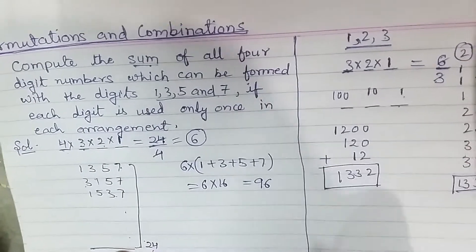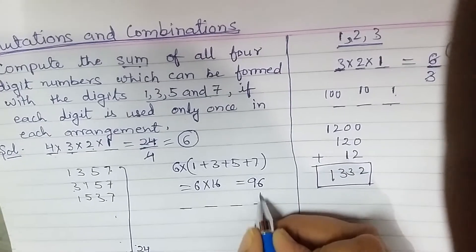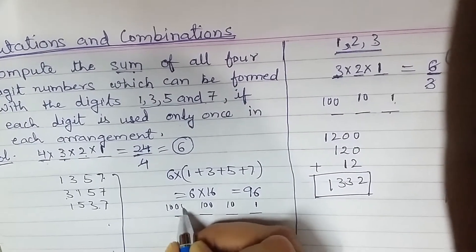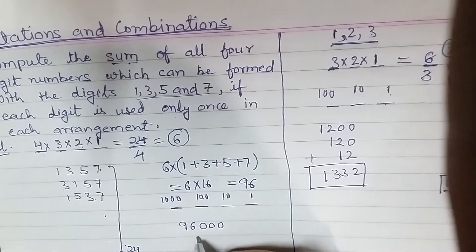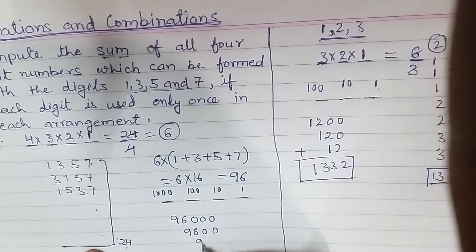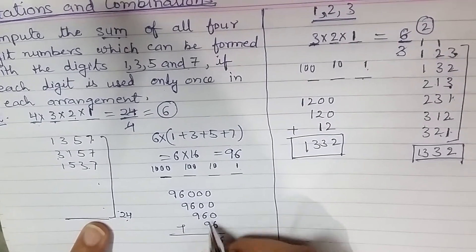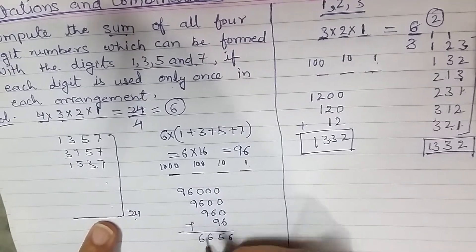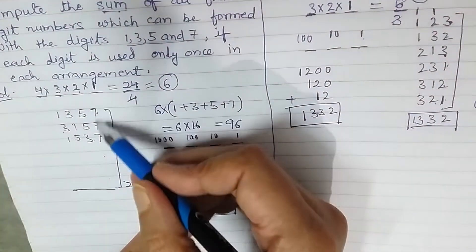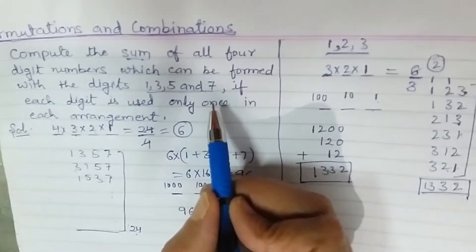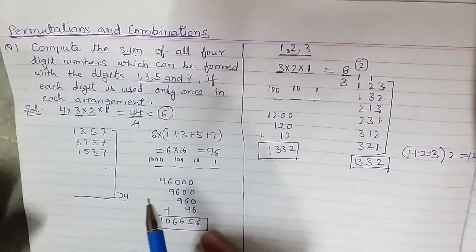There are four places: units, tens, hundreds, and thousands. For the thousands place we have 96×1000, for hundreds we have 96×100, for tens we have 96×10, and for units we have 96×1. Adding all these together gives us 96×(1000+100+10+1) = 96×1111 = 106656. This is the required sum of all four-digit numbers which can be formed with digits 1, 3, 5, and 7, each used only once.